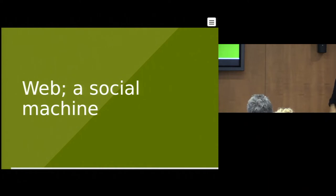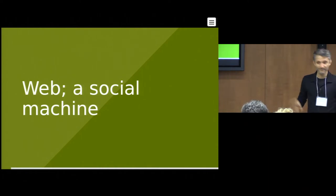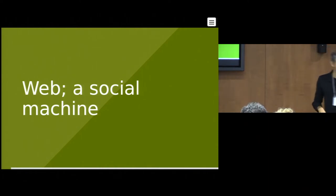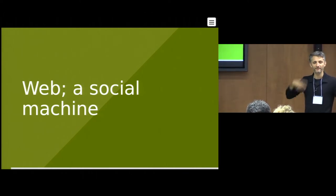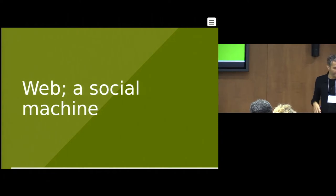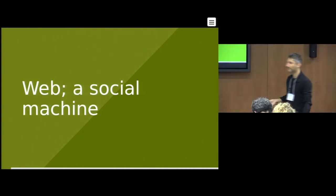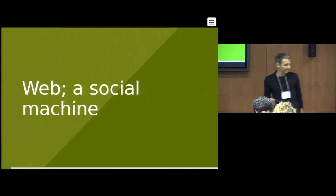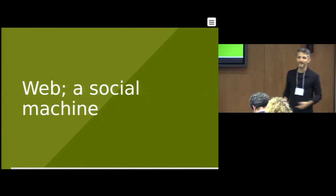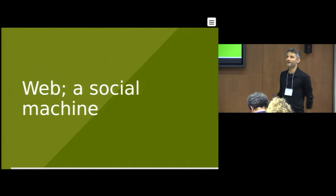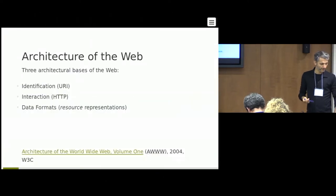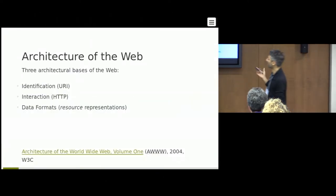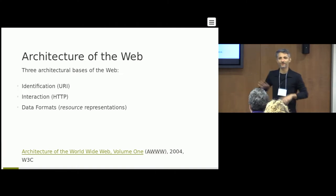This is going to be a very web-centric talk. The web is essentially a social machine — what we do to it and what happens on it feeds back to society, and the cycle continues. When Tim Berners-Lee proposed the web, he wanted it to have a social effect; it wasn't necessarily about solving a technical problem, but something to help society. I don't want to offend anyone — I just want to cover some basic ground so we're all on the same page.